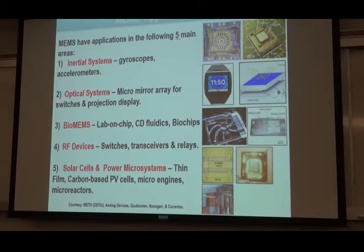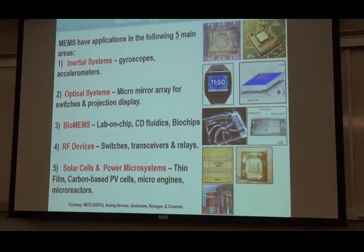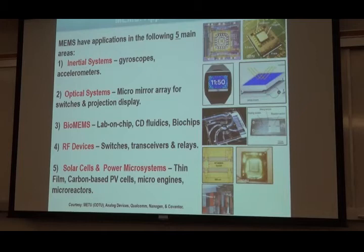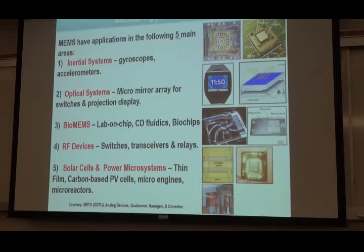There are five classes of MEMS as far as this class is concerned. The first one is inertial systems — systems that help you detect motion. Accelerometers and gyroscopes fall under this group. In fact, they were the first commercially successful application of MEMS. An accelerometer detects acceleration; a gyroscope detects rotation.